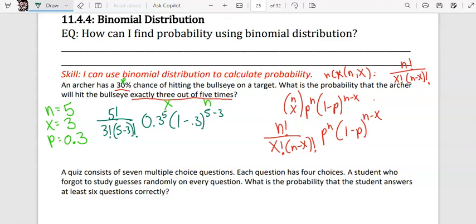Let's simplify it a little before putting it in the calculator. So 5 times 4 times 3 factorial over 3 factorial times 2 factorial. Well, 2 factorial is just 2, so that simplifies. So you have 10 times 0.3 to the 3rd power times 0.7 to the 2nd power.